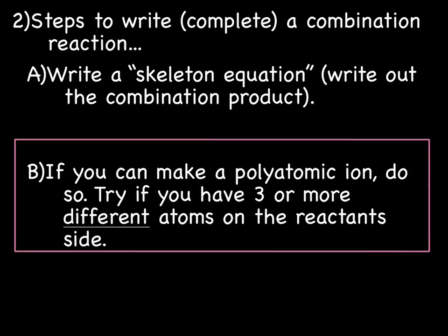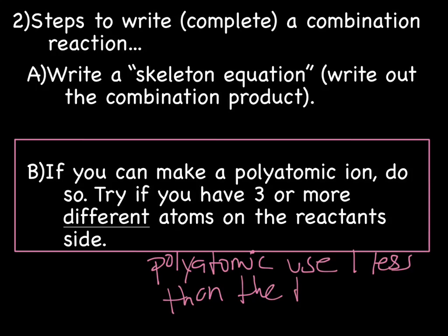And you always want to use, when you're making a polyatomic, you want to use one less than the total atoms. So if you have three different atom types, you're going to try to make a polyatomic out of two of the three. The third one will be used to bond.